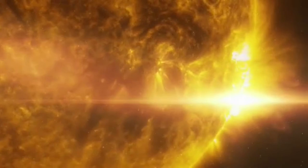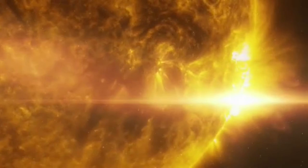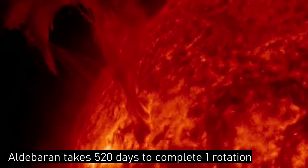Aldebaran's radius for example is 44 times that of the sun, but being so large it's over 400 times as luminous. Like most giant stars it spins slowly and takes 520 days to complete a rotation.